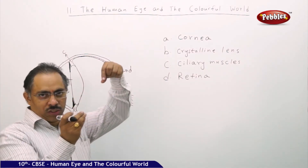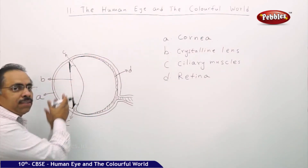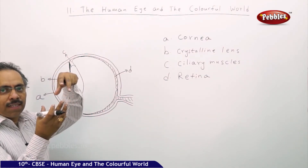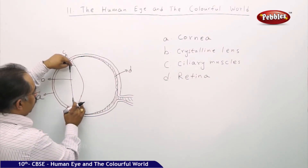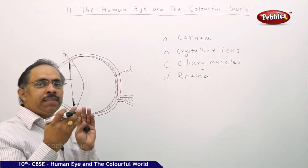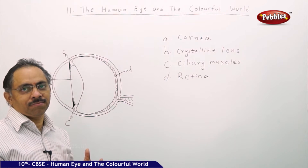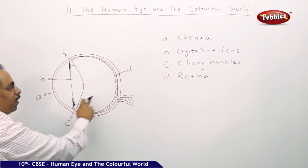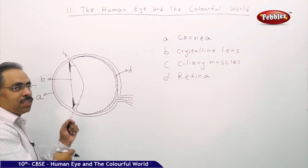When the ciliary muscles stretch and contract, they stretch the lens and the lens becomes thinner. When they relax, they push the edges of the lens, making it a little bit thicker. When the lens becomes thicker, the focal length of the lens becomes lesser. So the main function of the ciliary muscles is to change the thickness of the lens.